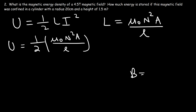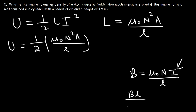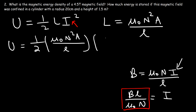The magnetic field created by a solenoid is mu zero times the number of turns times the current divided by the length of the solenoid. Solving for the current gives us B times L divided by mu zero times n. We're going to replace I with this quantity, so I squared becomes B²L² over mu zero squared times n squared.